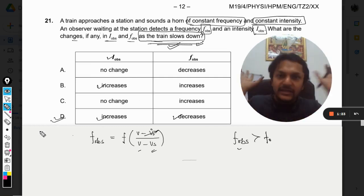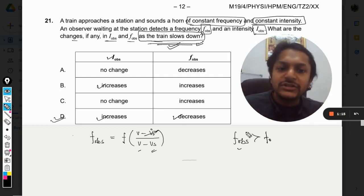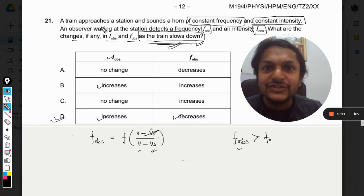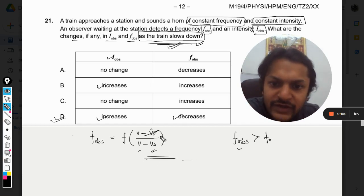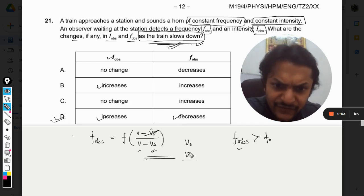Now why have I told you that this question is one of the most difficult questions? Because there is another factor here that they have added: the train is not moving at a constant speed. In earlier questions we have always used v_o as the constant velocity of observer and v_s as the constant velocity of source.